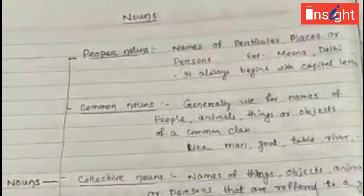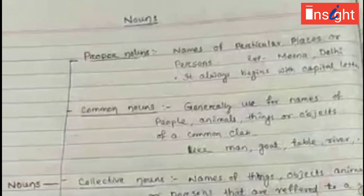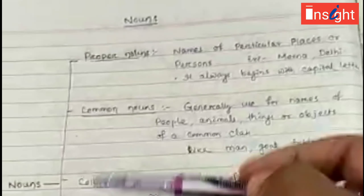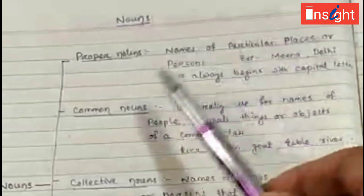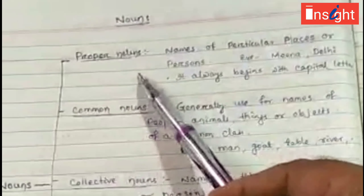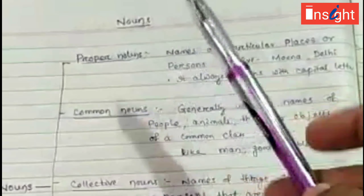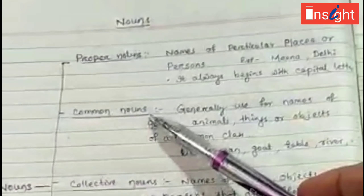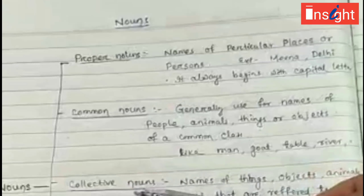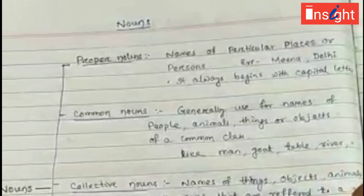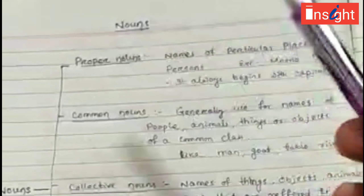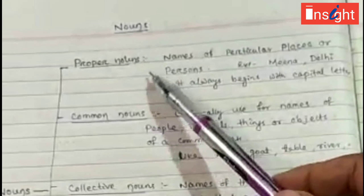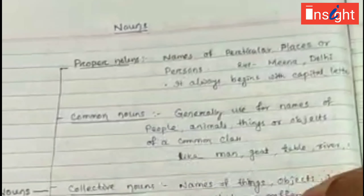Nouns are generally divided into five different types: the first one is proper noun, second is common noun, then collective noun, material noun, and abstract noun.